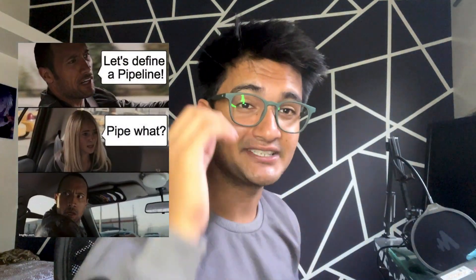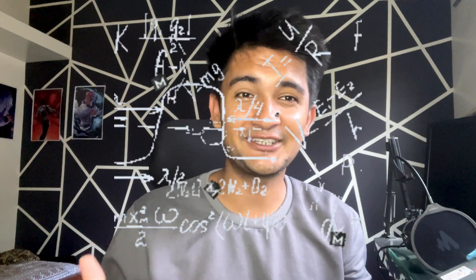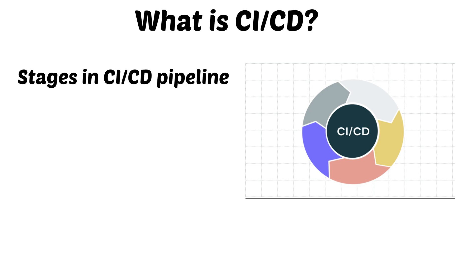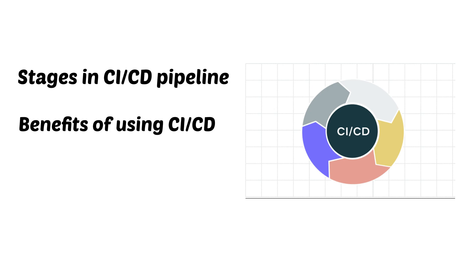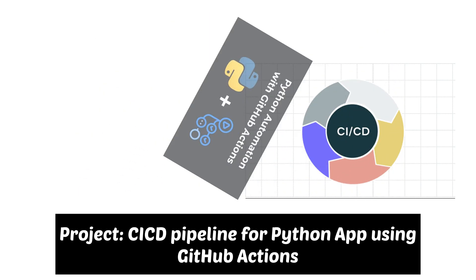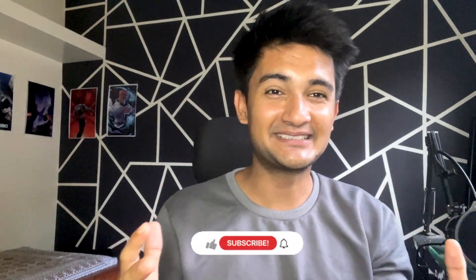What is CI/CD? This is one of the most asked DevOps interview questions and also a very popular DevOps practice that every company is following these days. In this video I'm going to explain what is CI/CD in a very simple manner, along with different stages in a CI/CD pipeline, benefits of using CI/CD in DevOps, some popular CI/CD tools, and a hands-on demo to set up a CI/CD pipeline for a Python application using GitHub Actions. Make sure you watch this video till the end and practice the hands-on demo.